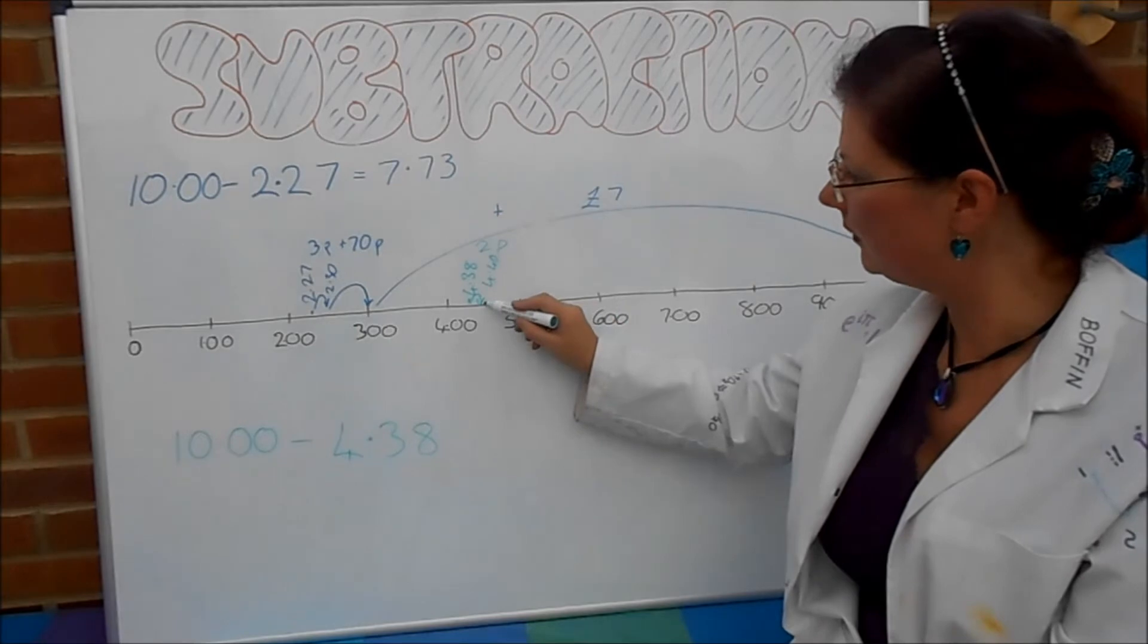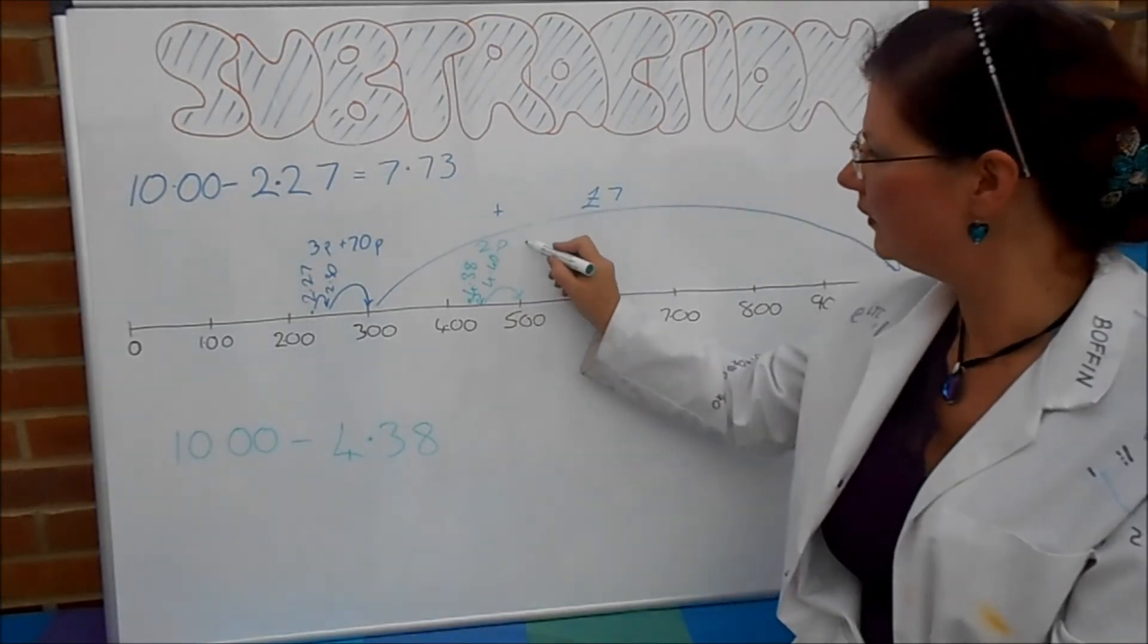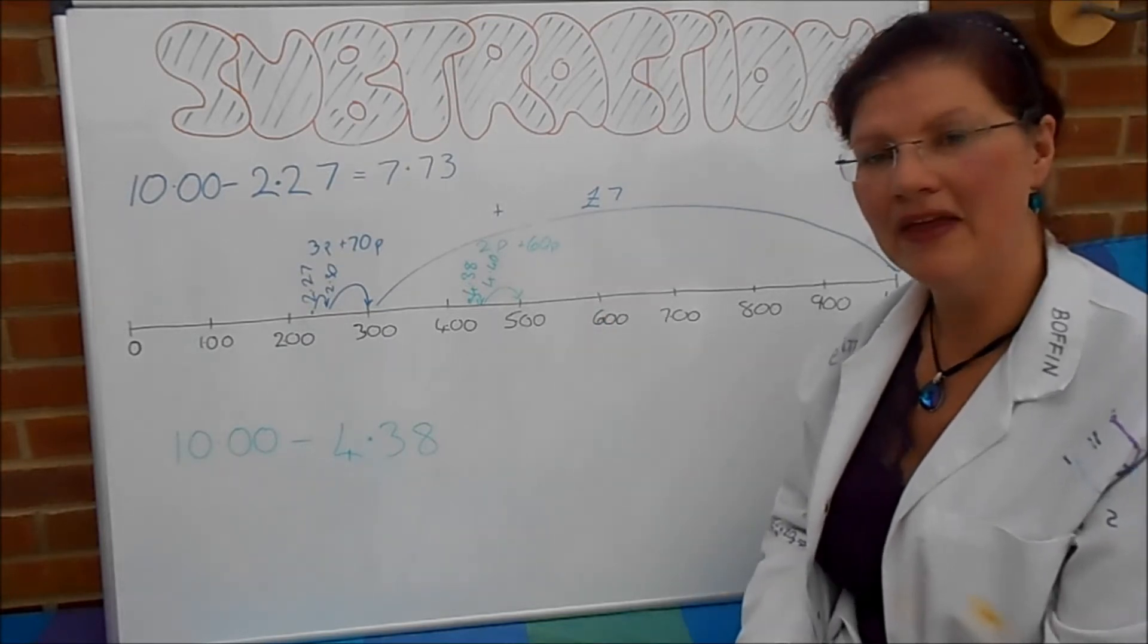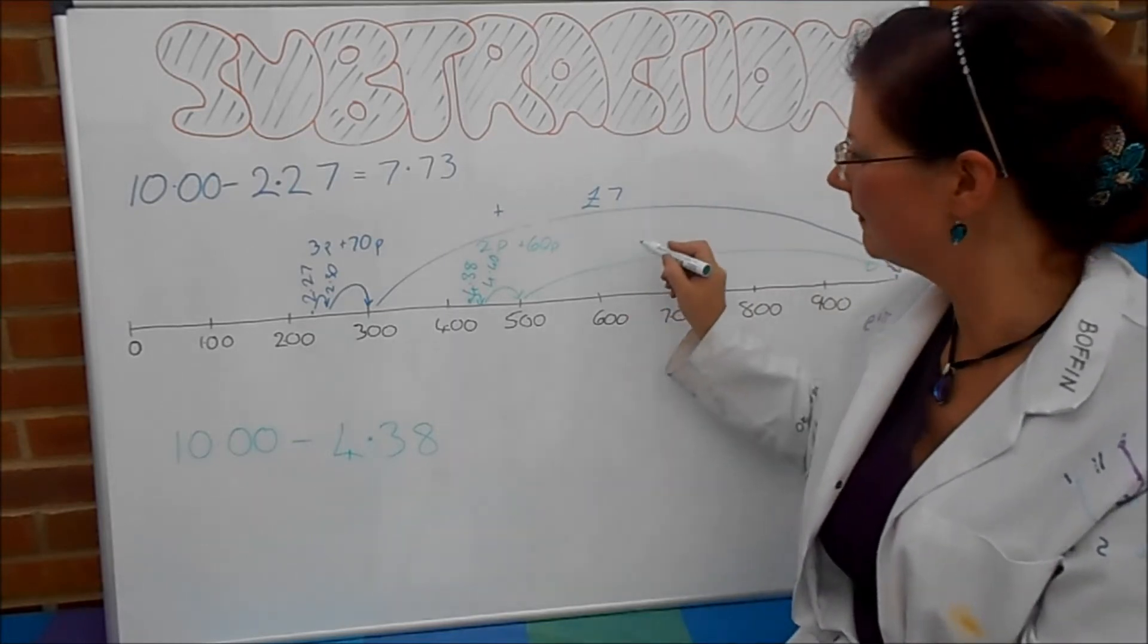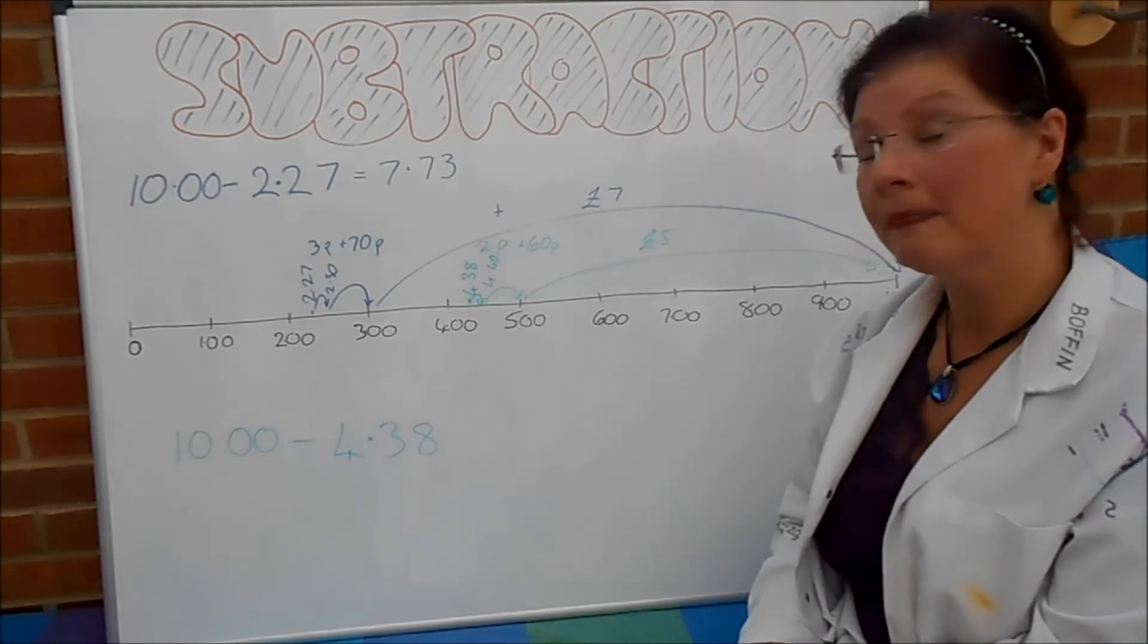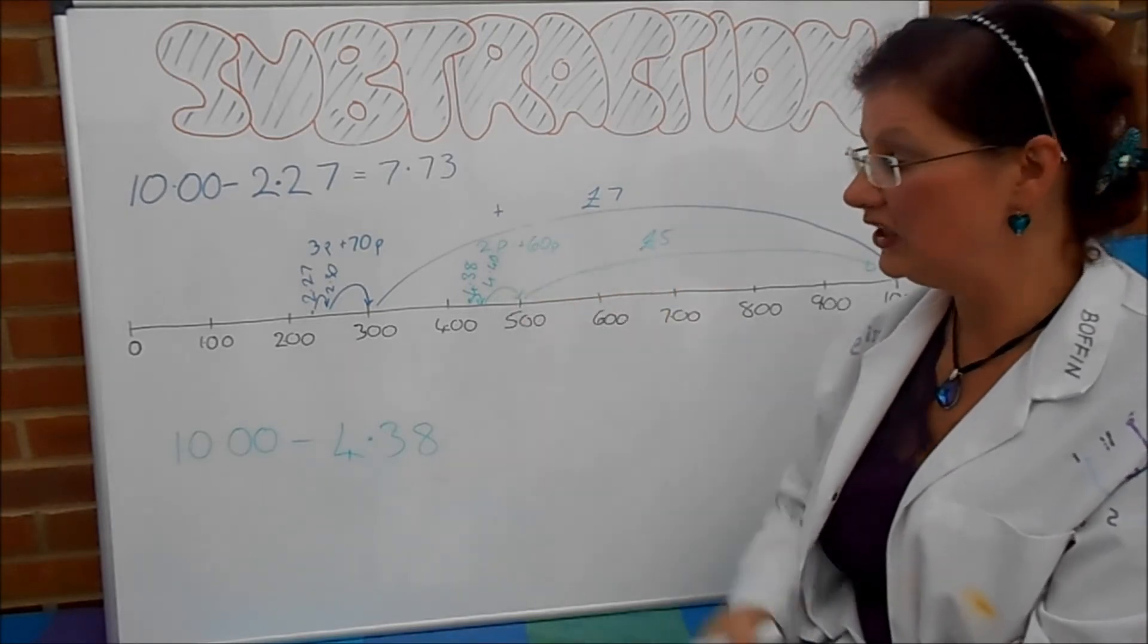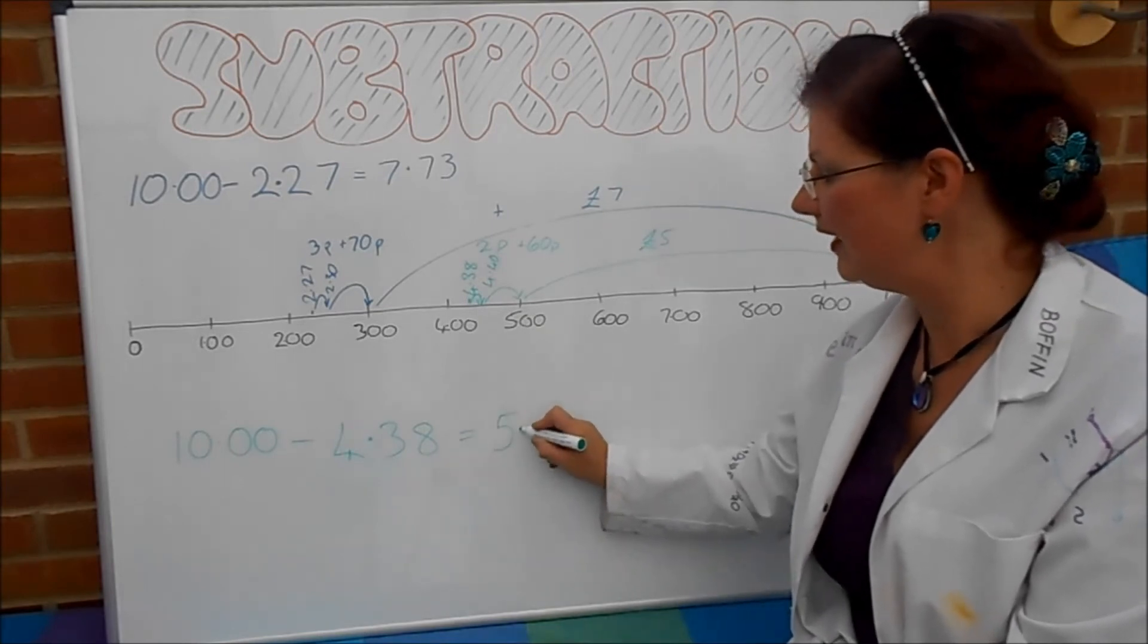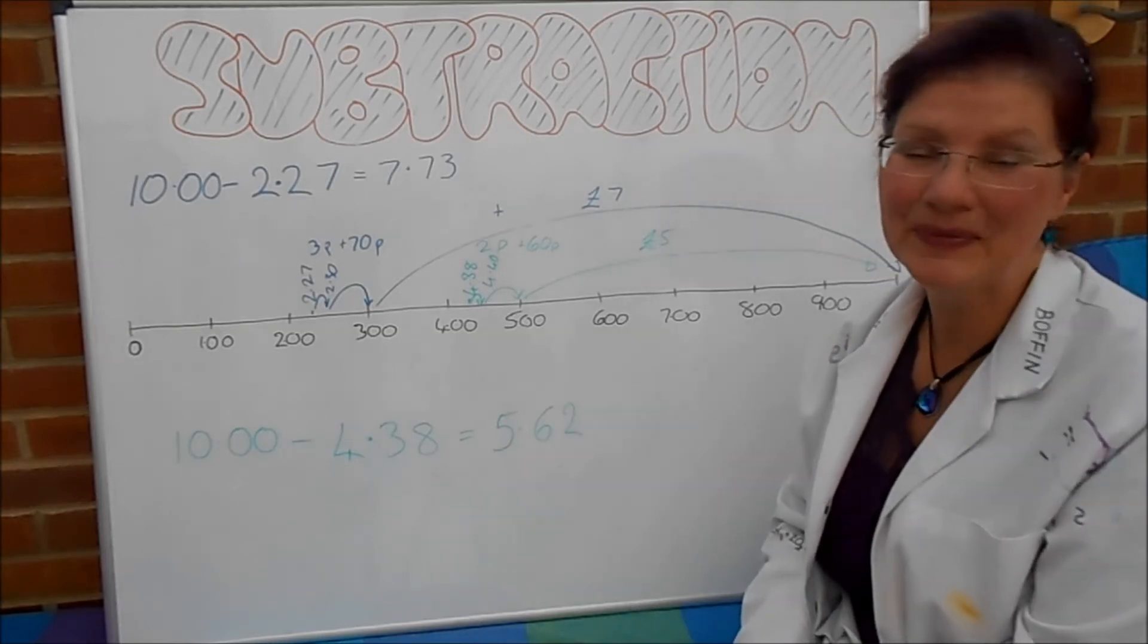And then, from £5, a jump to £10. And that's £5, pretty obviously. So, all in all, we've added £5, 60p, and 2p. So, the answer is £5.62. Pretty easy, isn't it?